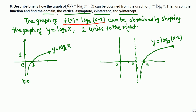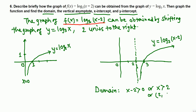For the domain: for the regular log₃(x), x must be greater than 0. For log₃(x-2), x-2 must be greater than 0, which means x must be greater than 2. So the domain is all numbers greater than 2, or in interval notation: (2, ∞).